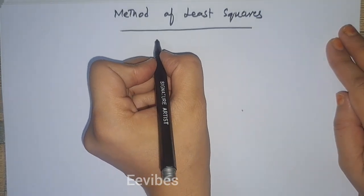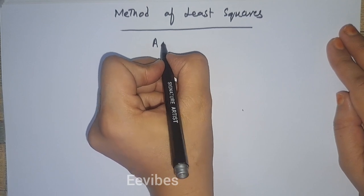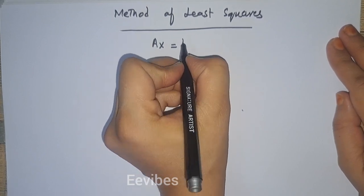This method is actually used for finding the approximated solutions of the system of the form Ax is equal to B.